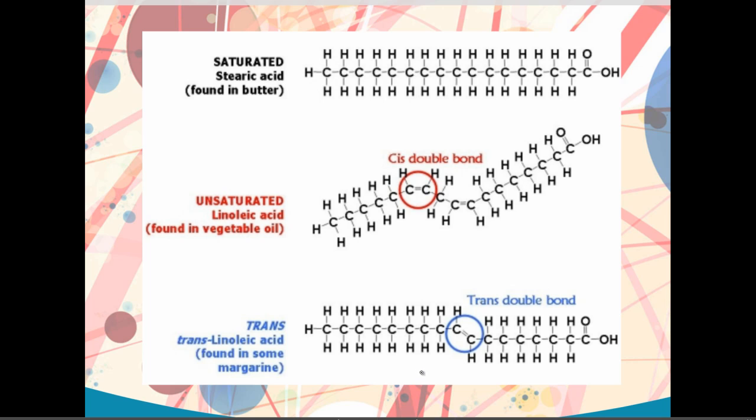But here's the problem. In our bodies, we have the enzymes or the molecular scissors that can happily cut this, no problem. Turns out, if your hydrogens are like this, we don't have the scissors to cut this apart.